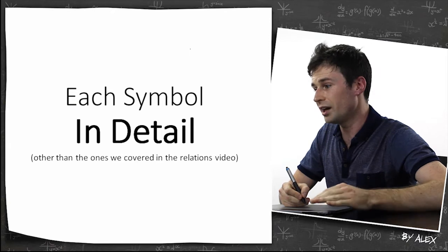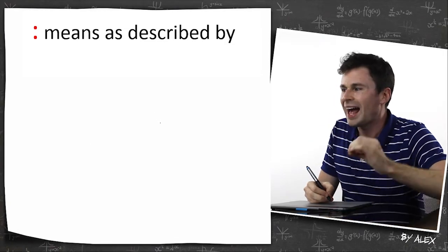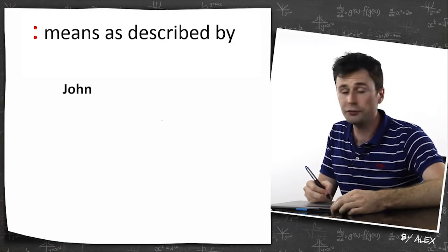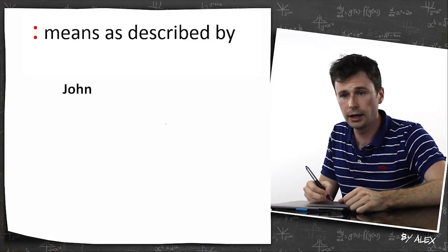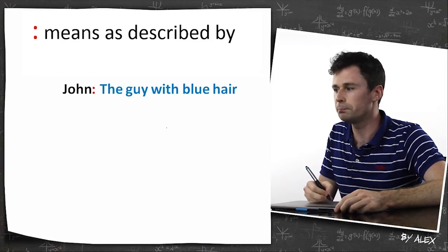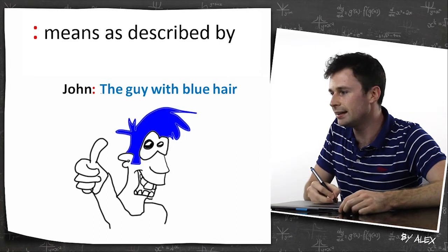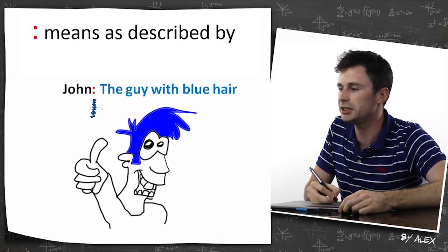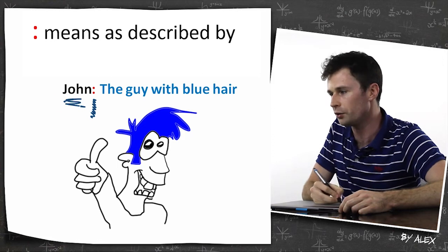Let's have a look at each symbol in detail. This little symbol means 'as described by'. If I said 'you know John', you'd be like 'which John?' and I'm like 'the dude with blue hair'. So you can see this basically gives you more information or describes which John this is.